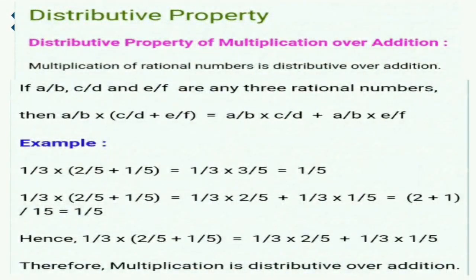Distributive property of multiplication over addition. Multiplication of rational numbers is distributive over addition. If a upon b, c upon d, and e upon f are any 3 rational numbers, then a upon b times (c upon d plus e upon f) equals a upon b times c upon d plus a upon b times e upon f.